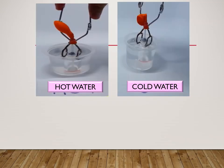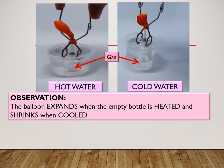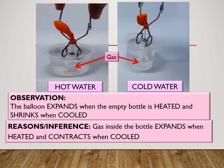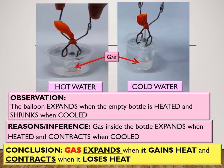The empty bottles are not really empty — they actually contain gas inside. The observation is the balloon expands when the empty bottle is heated or gains heat, and the balloon shrinks when the empty bottle is cooled or loses heat. The reason or inference is gas inside the bottle expands when heated or gains heat, and contracts when cooled or loses heat. The conclusion is gas expands when it gains heat and contracts when it loses heat.